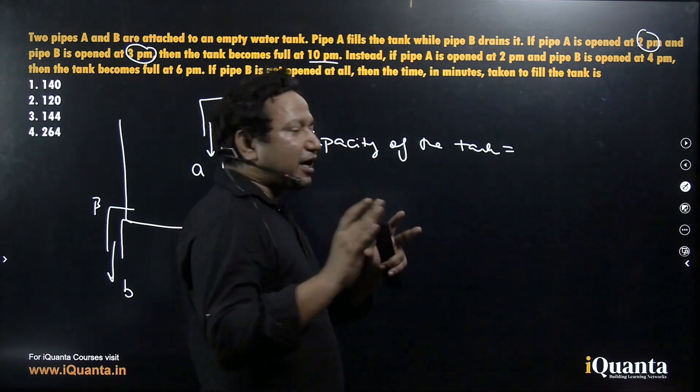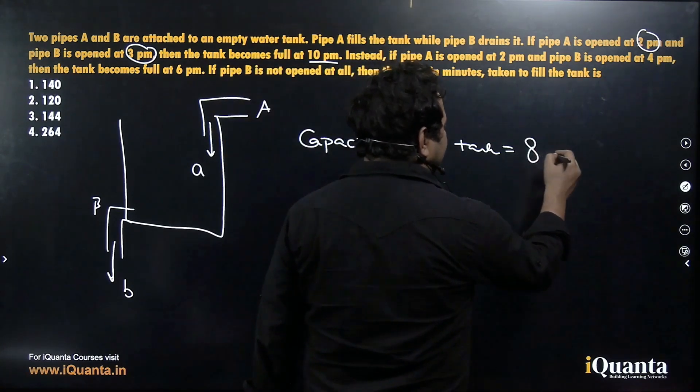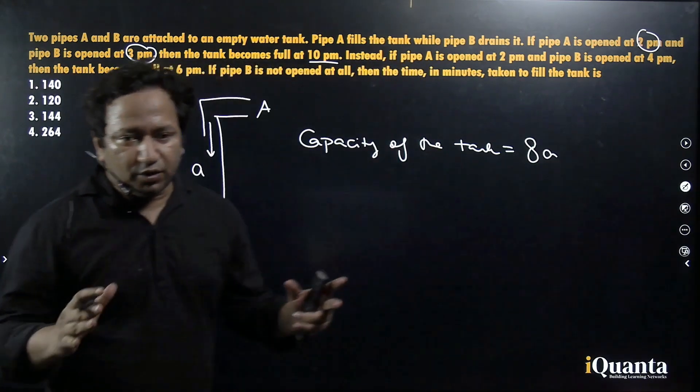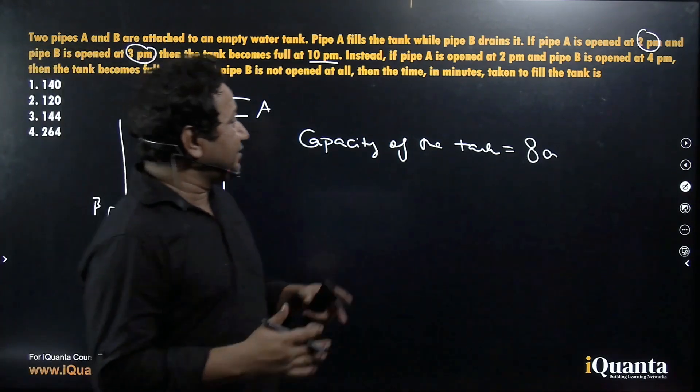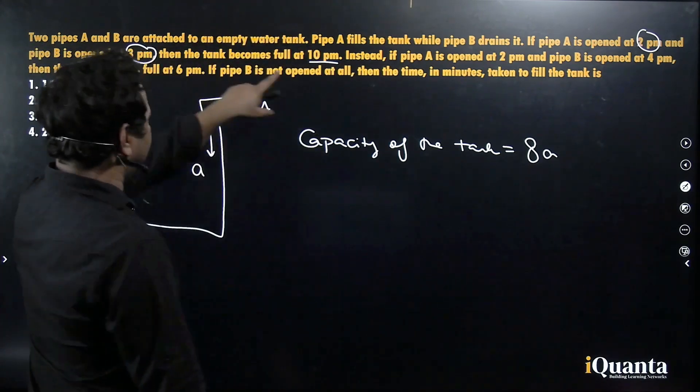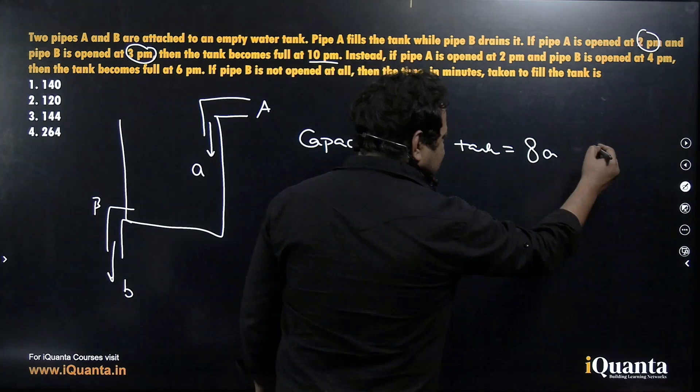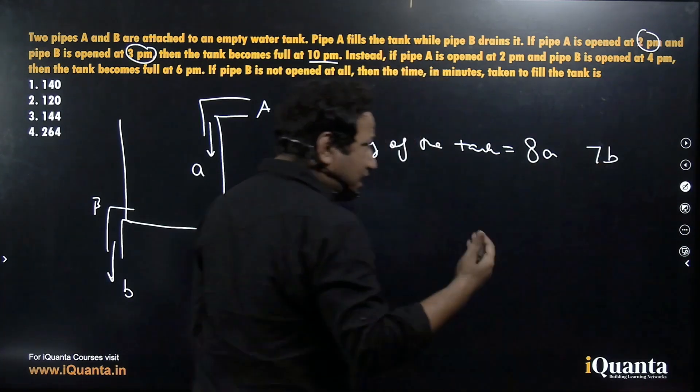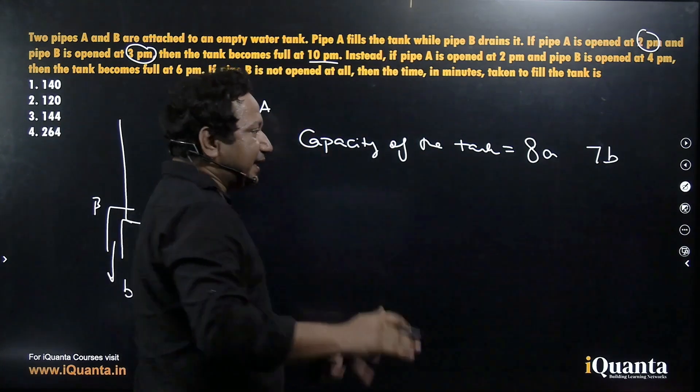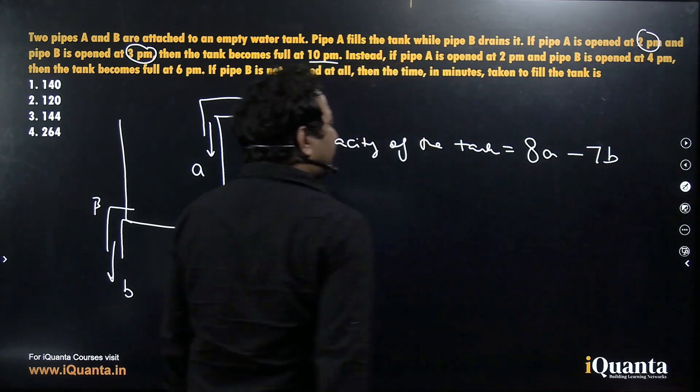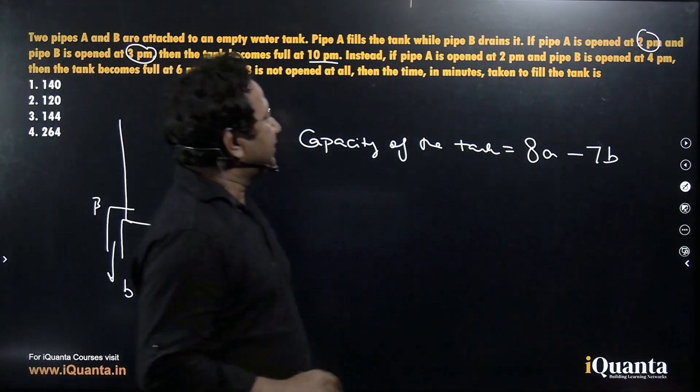If you look at this, if pipe A is opened at 2 p.m. and pipe B is opened at 3 p.m., the tank becomes full at 10 p.m. Now, we can actually find the capacity of the tank. As we know that from 2 to 10 p.m., pipe A is functioning. That means, it has functioned for 8 hours. That means, 8A would be the amount of liquid poured in. And pipe B is functioning from 3 to 10. That is for 7 hours. So 7B will be the amount of liquid drained out. So 8A minus 7B would actually be the capacity of the tank from the first condition.